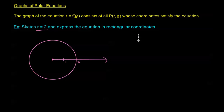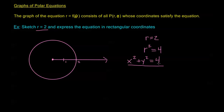Now expressing this in rectangular coordinates: if I have r equals 2, let's go ahead and square both sides first to avoid square roots. Squaring gives r squared equals 4, and since r squared equals x squared plus y squared, we get x squared plus y squared equals 4. This is exactly the equation of the graph — a circle centered at the origin with radius 2.